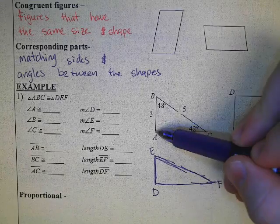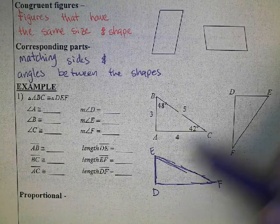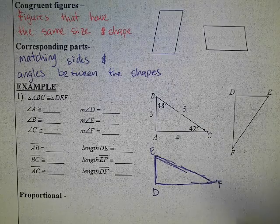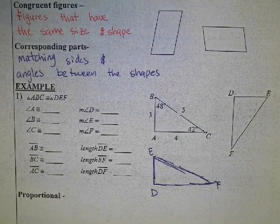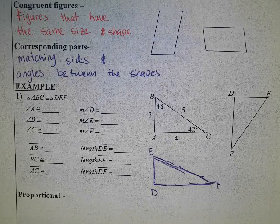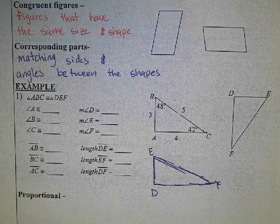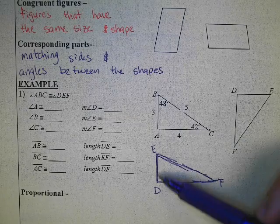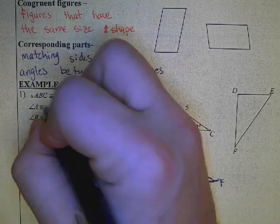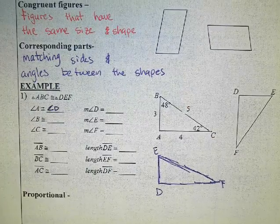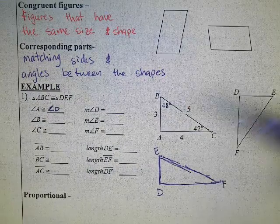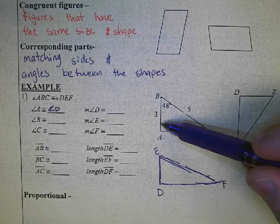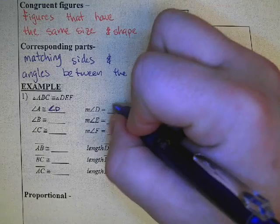D, E corresponds to A, B. B, C corresponds to E, F. Angle C corresponds to angle F. So just by changing that orientation, it's much easier to see which parts match up. So angle A is congruent to angle D. The measure of angle D, well if angle A is 90, then the measure of angle D is 90.